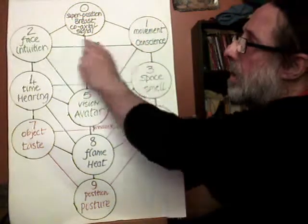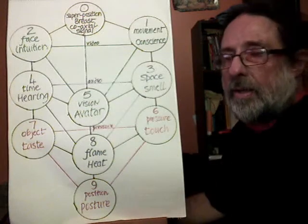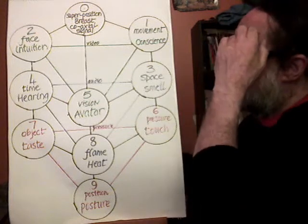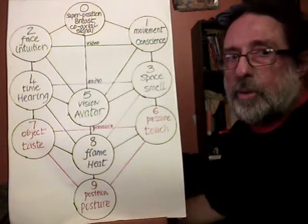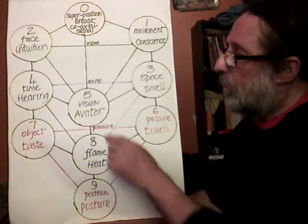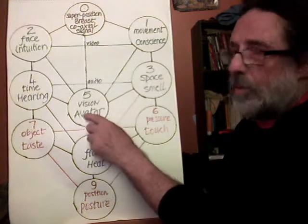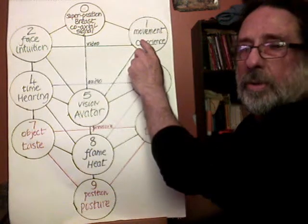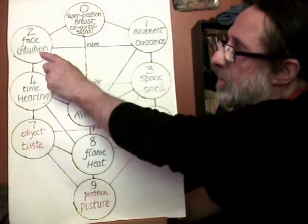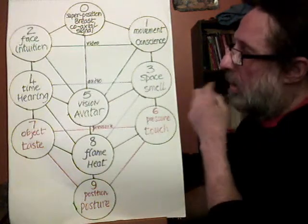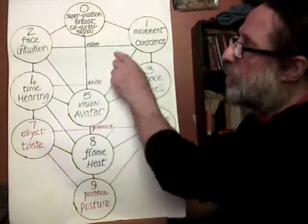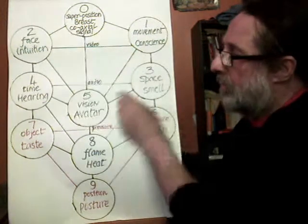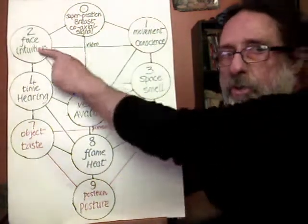And then we have the attention triangle. We see the vision, the avatar, the driver or the ego. We can see movement or we can see faces. So there is our attention — our attention follows the movement and identifies faces. So we have the movement of the attention.